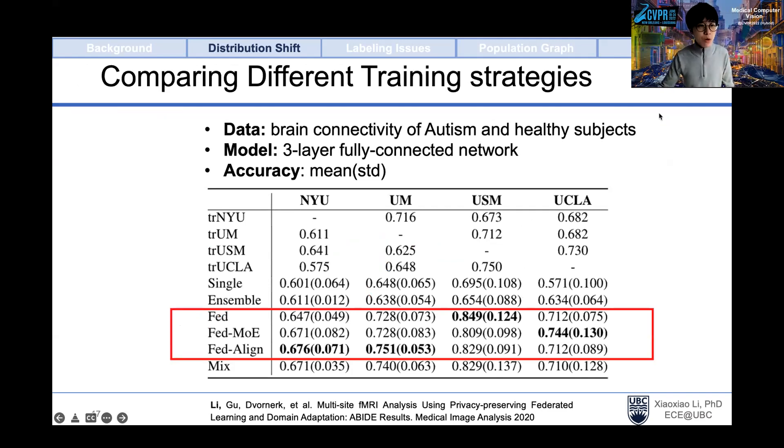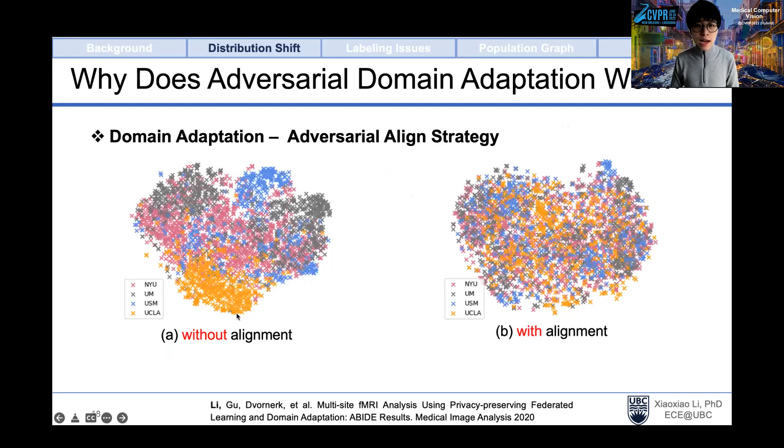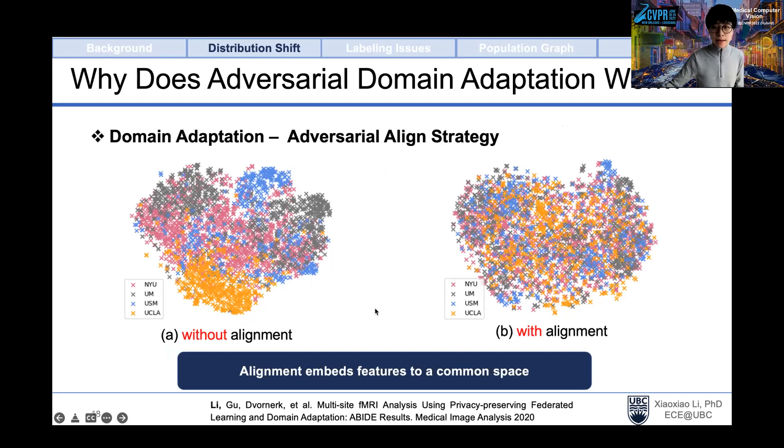For this method, we tested on a medical task which is for autism patient classification. Here we incorporated four medical institutions. First, we compared federated learning based methods versus centralized training methods. We observed that federated learning methods can outperform the alternative methods. Further, we showed that by adding the domain alignment strategy, we can further improve the performance of federated learning. We use t-SNE to visualize the space without and with alignment. We found that the alignment method overall improved the domain adaptation, thus explaining why incorporating this alignment strategy can improve federated learning's data utility.